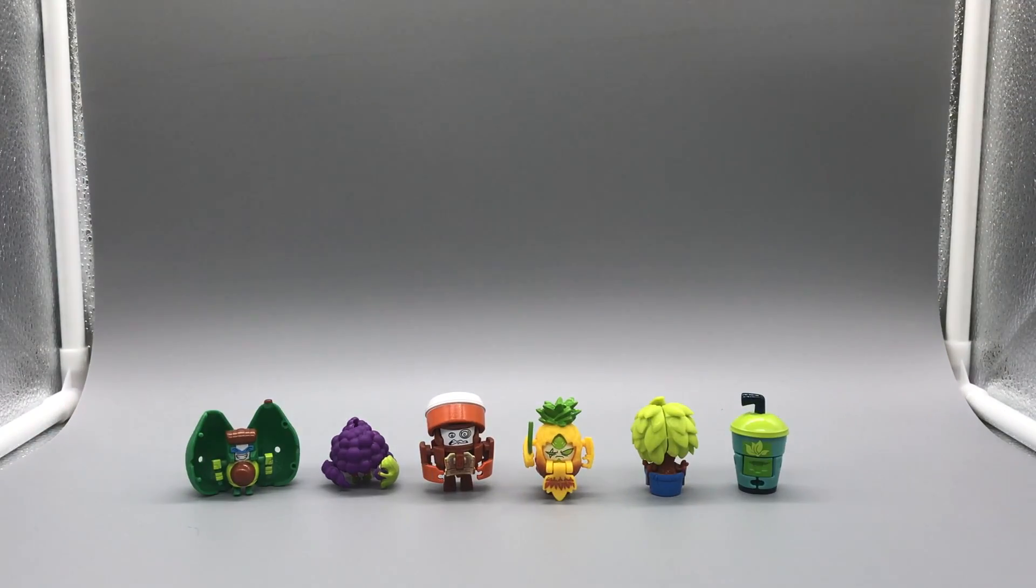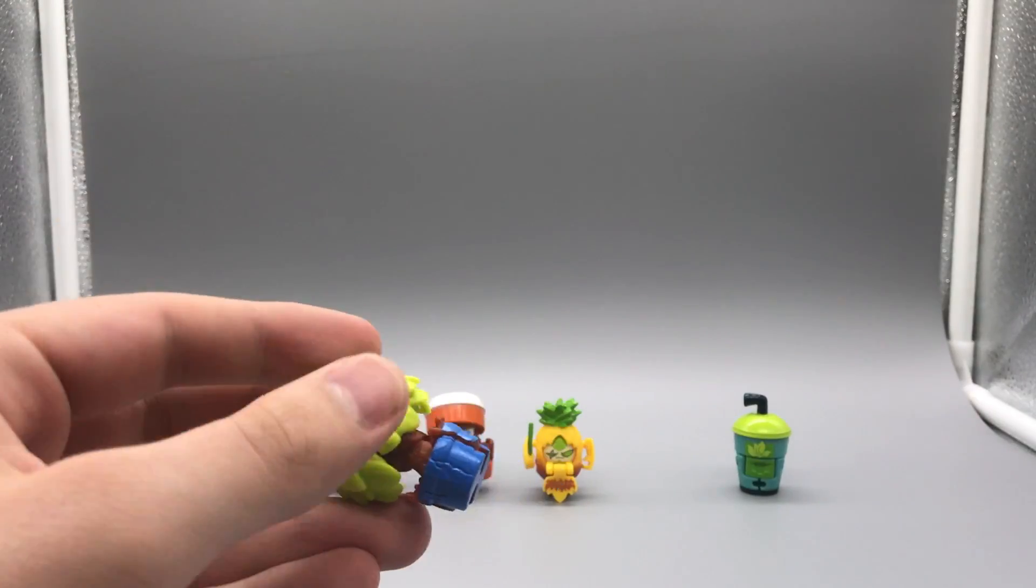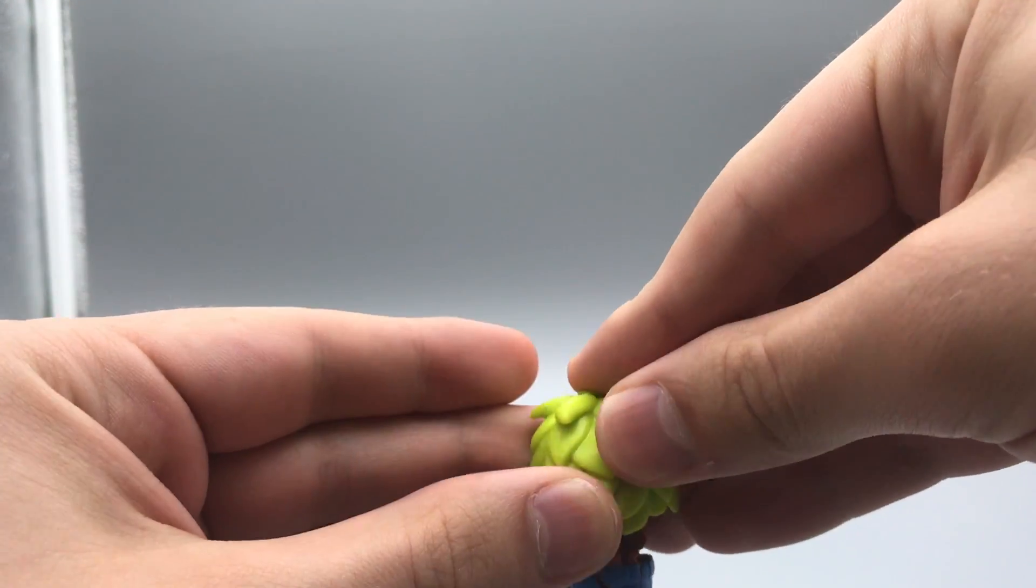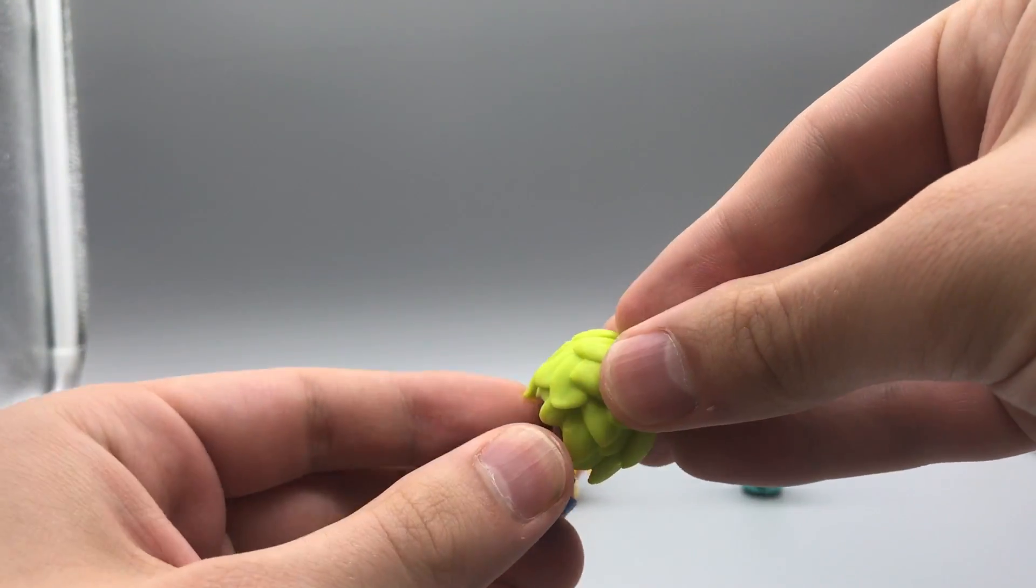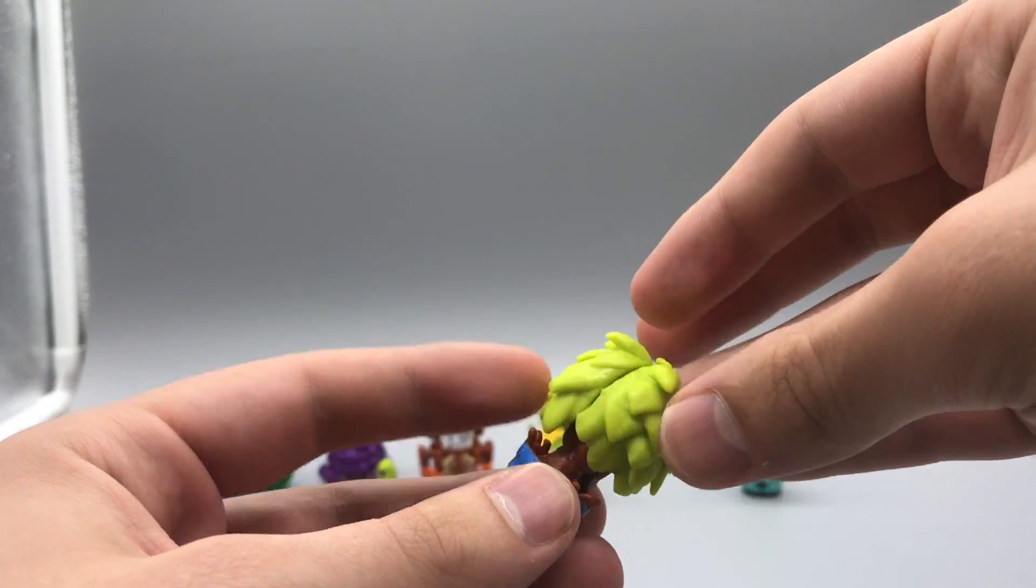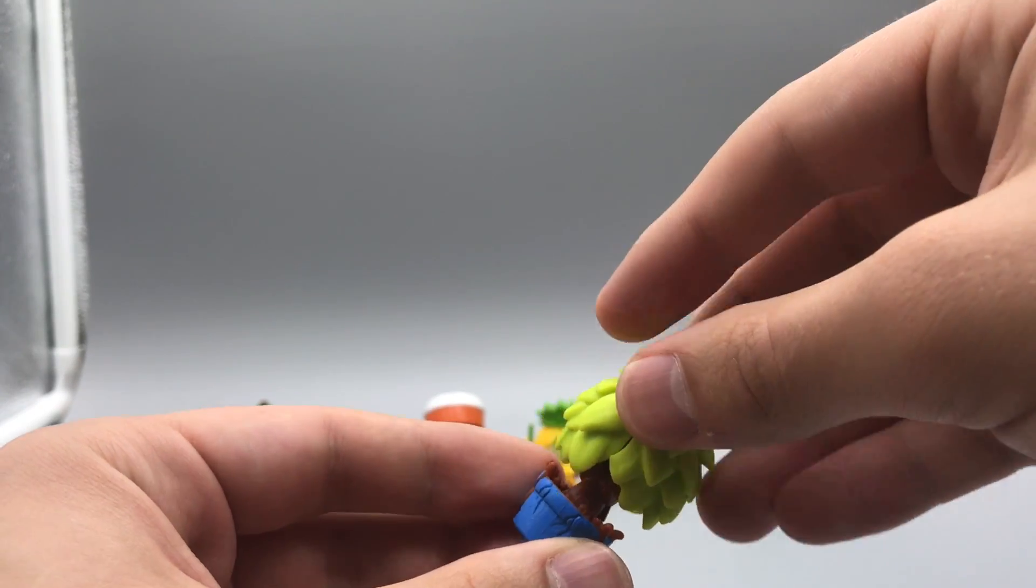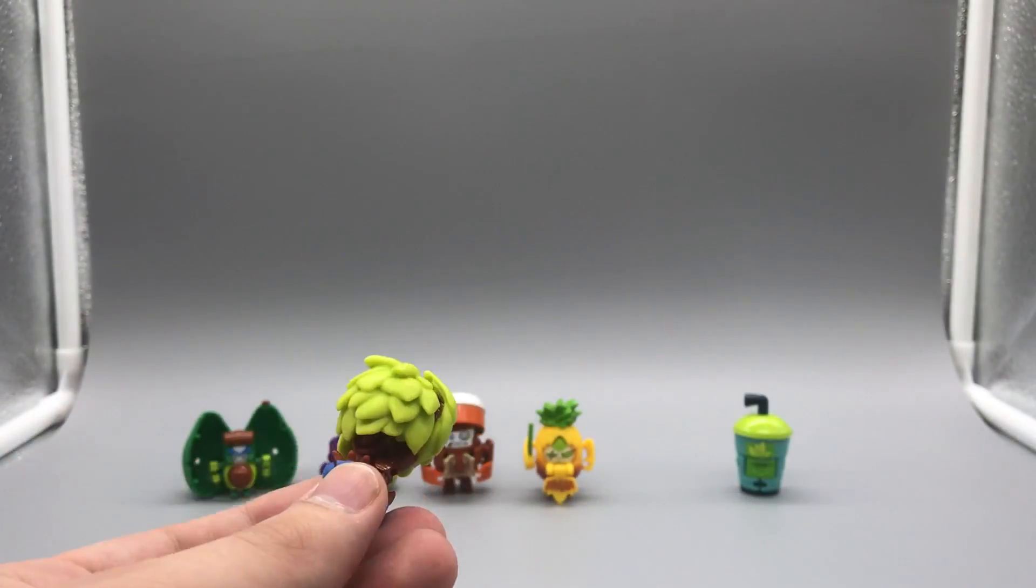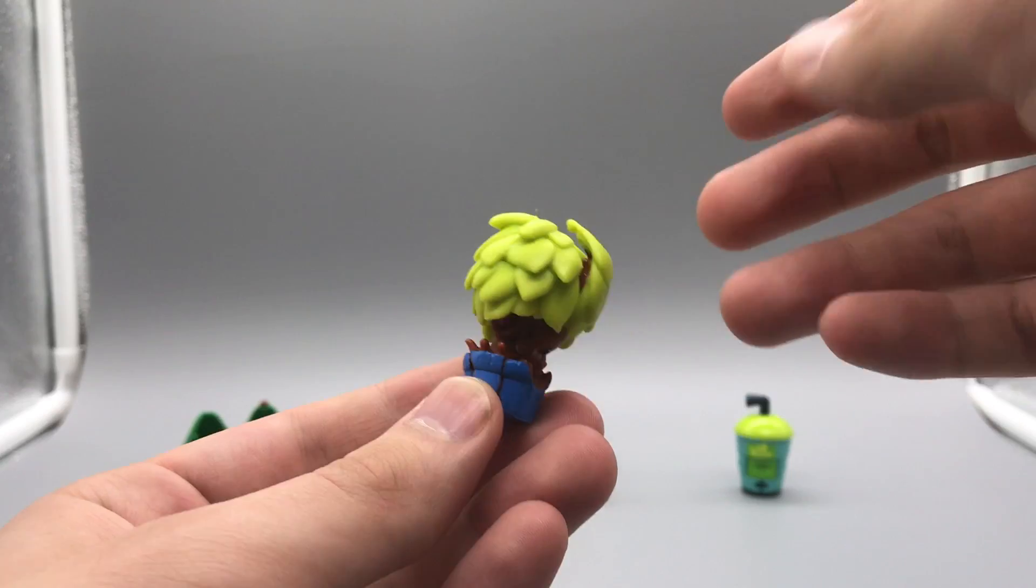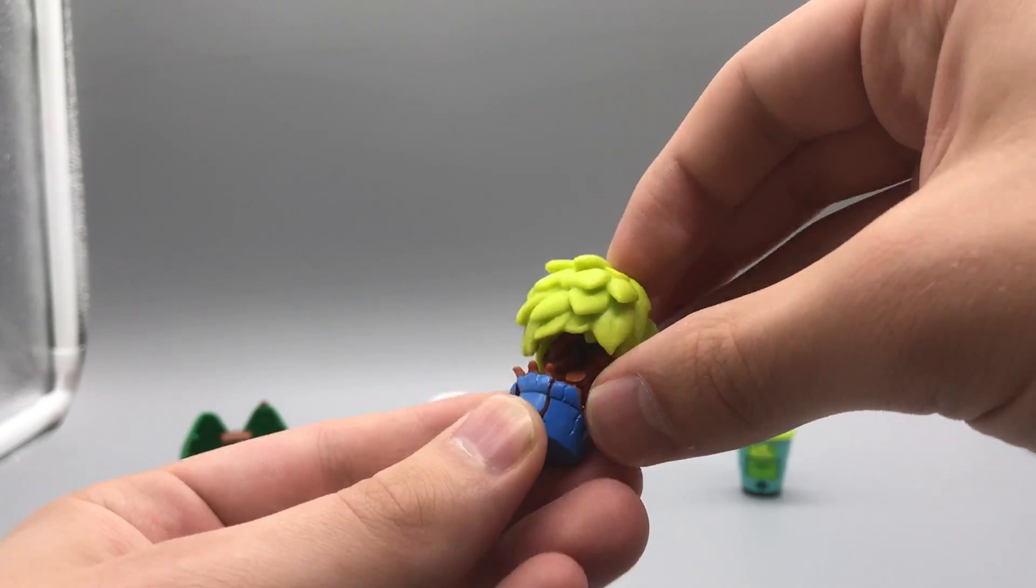And then we have Smerg the Sad who is a color lift, recolor, redeco. Redeco of, yeah, I was right the first time. Of, wow, why can't I remember? Rootwing from series one turning into a spinach plant.